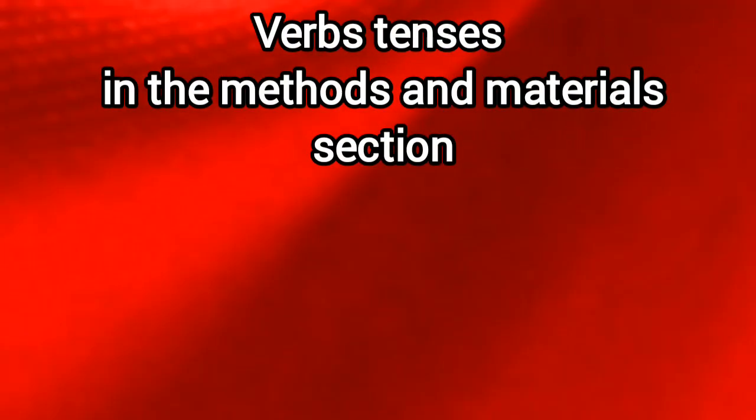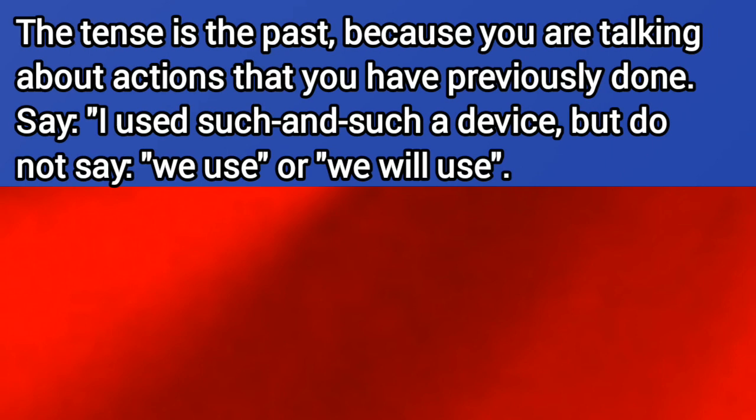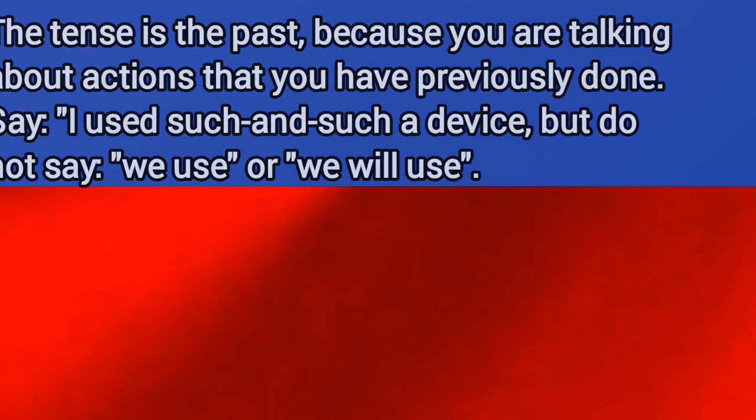Verb tense in the methods and materials section. The tense is the past, because you are talking about actions that you have previously done. Say, I used such and such a device, but do not say, we use, or, we will use.